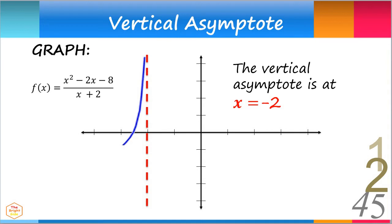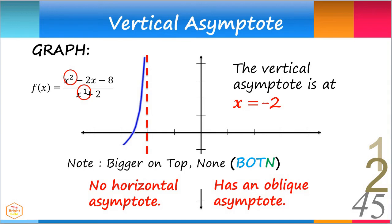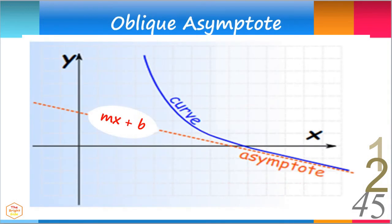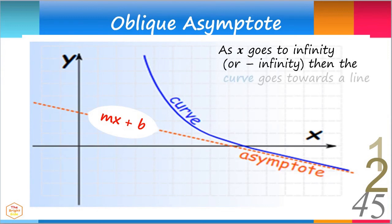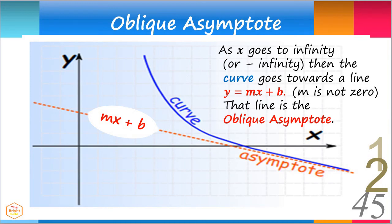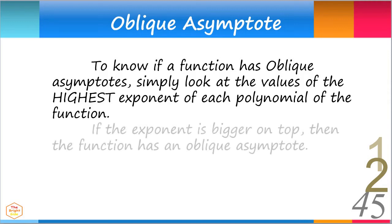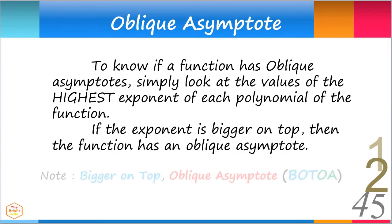For this function, what is the horizontal asymptote? Notice the highest exponent is bigger on top, which means there is no horizontal asymptote. What this curve has is an oblique asymptote. As x goes to infinity or negative infinity, the curve goes towards a line y equals mx plus b, where m is not 0 — that line is the oblique asymptote. If the exponent is bigger on top, the function has an oblique asymptote.